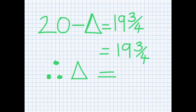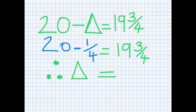Here we have twenty take away triangle equals nineteen and three quarters. Thinking about this, twenty take away a quarter will leave me with nineteen and three quarters. Therefore, the value of triangle is equal to one quarter.